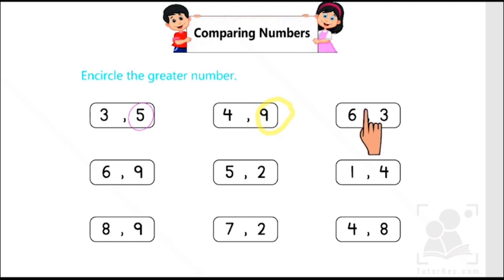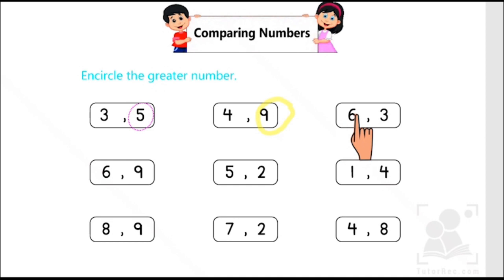In the next box, six and three are given, and again we have to identify the greater number. So we count from one to six: one, two, three, four, five, six. Six comes later than three, therefore six is the greater number.